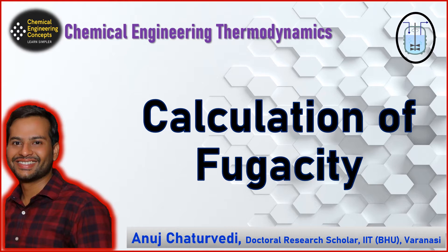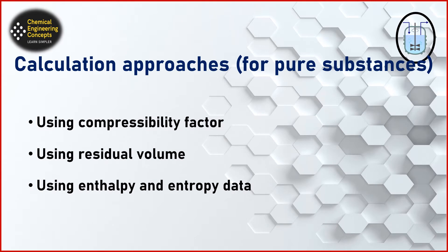Now let's look at the methods through which we can calculate the fugacity term. We have basically three approaches to calculate the fugacity for a pure substance. Those three approaches are: using the compressibility factor, using the residual volume method, and using the enthalpy and entropy data. We'll look at each of them one by one, starting with the first method — evaluating fugacity using the compressibility factor.